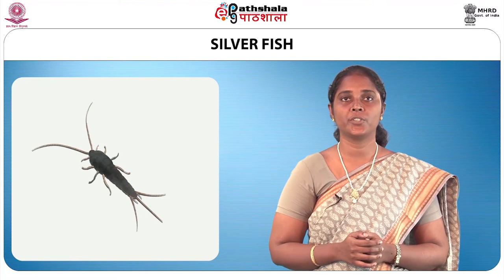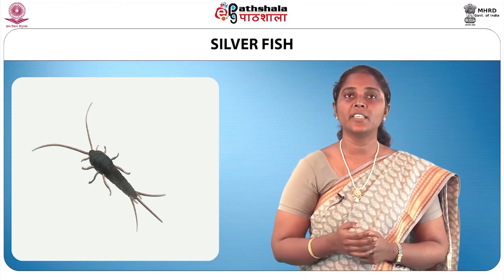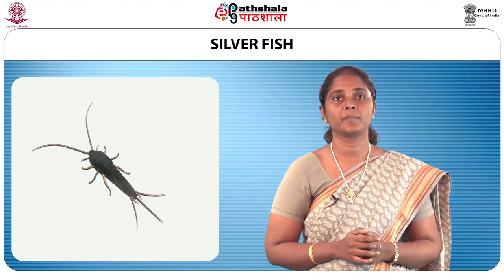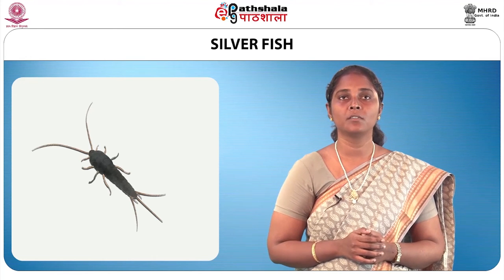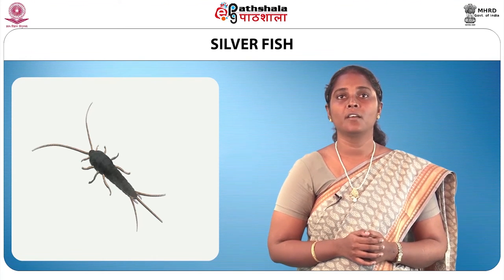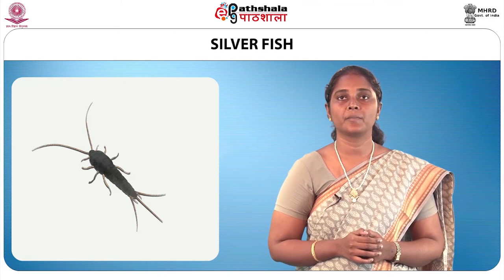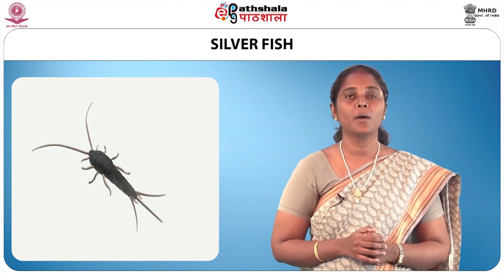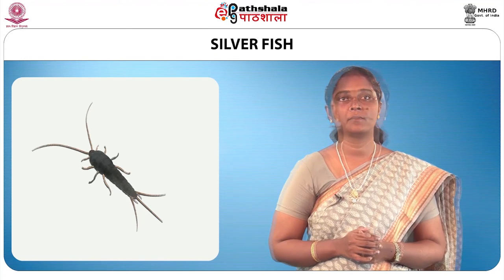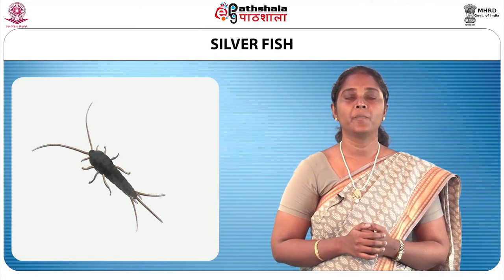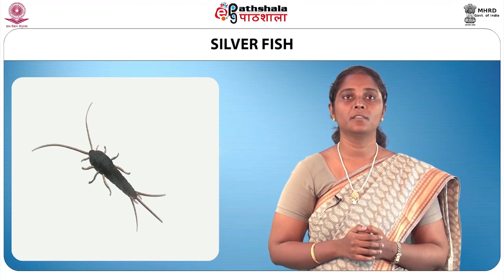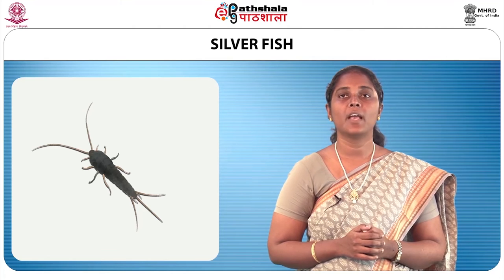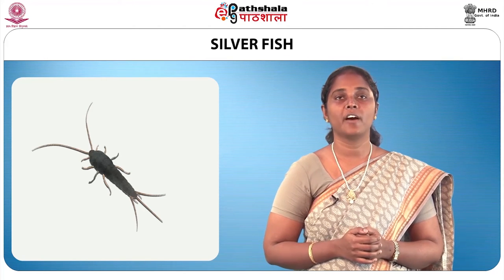Silverfish are silvery-grey insects that look like minute fish without fins, about 1 centimetre long. They are nocturnal and found in moist areas, feeding on cellulosic materials like papers and fabrics. They can be prevented by keeping moist areas clean, and treatment with insecticides like pyrethrum and sodium fluoride crystals is very effective.